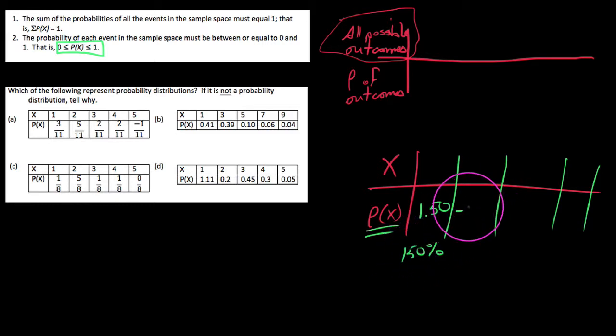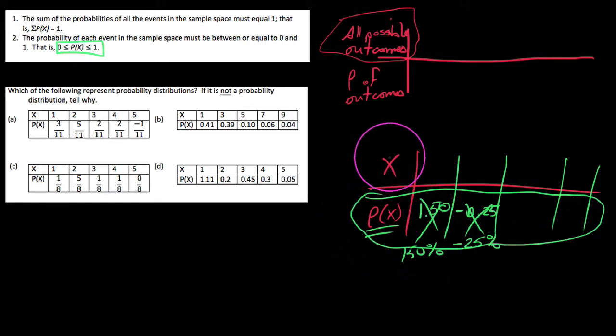Or if I were to list a negative 0.25, 0.25 of course is 25%, but to say negative 25% wouldn't be reasonable. So all probabilities that we list in probability distributions have to be between 0 and 1. So that's just kind of a gimme. The other property is this.